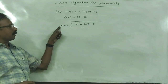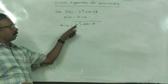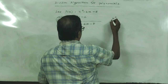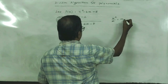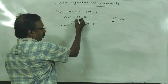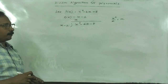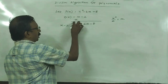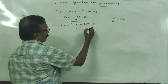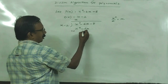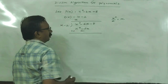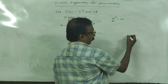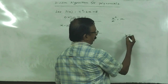Here we have x and x². So x² divided by x is x. The first term in the quotient polynomial is x. Now x times x is x², and x times -2 is -x. Now changing the sign and add — this is like how we divide a number by another number.